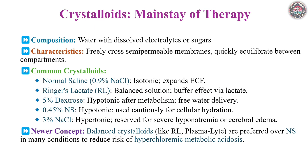Crystalloids consist of water and electrolytes, freely crossing vascular membranes. Common types include isotonic normal saline, balanced Ringer's lactate, and hypertonic 3% saline. Recent evidence favors balanced crystalloids like Plasmalyte over normal saline to mitigate hyperchloremic acidosis and renal injury, particularly in large-volume resuscitation.